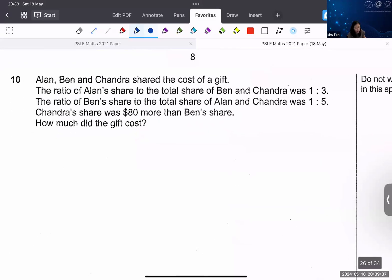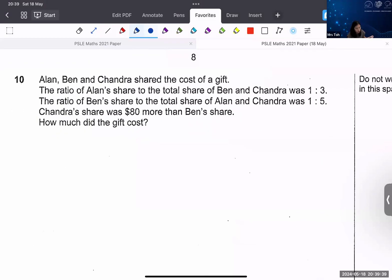Okay, look at this question. Alan, Ben and Chandra share the cost of the gift. After they share the cost of the gift, they tell you the proportion of Alan's share to Ben and Chandra, 1 to 3. Ben's share to the total of Alan and Chandra is 1 to 5. What is the concept here? I don't just want to go through answers, but I want to go through concept here.